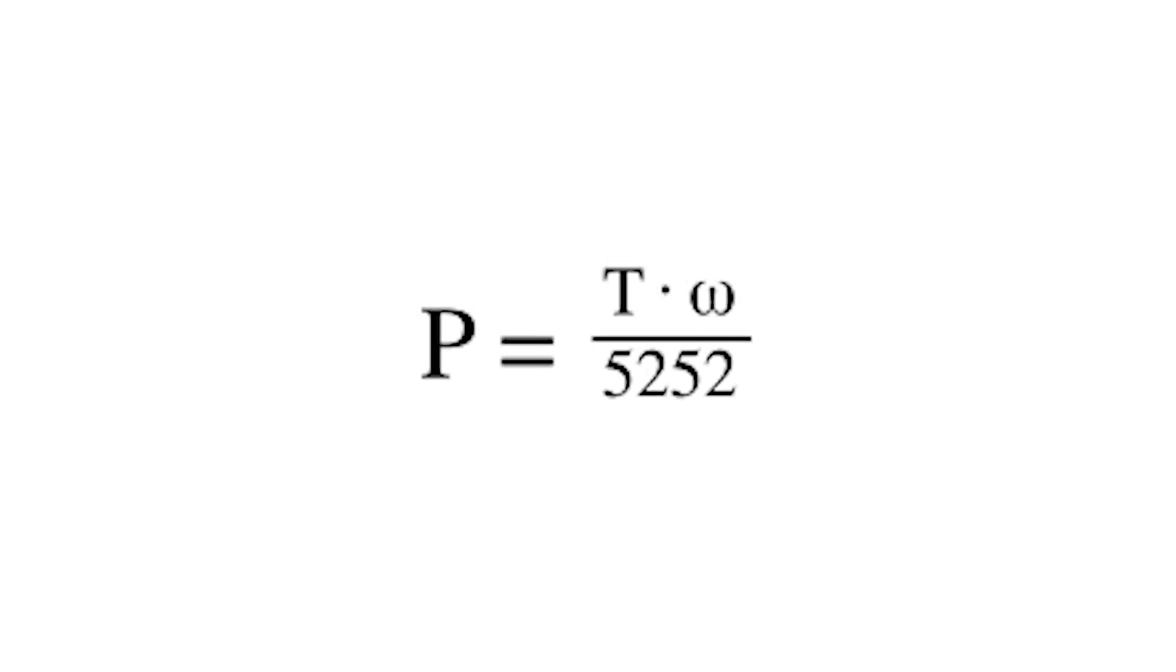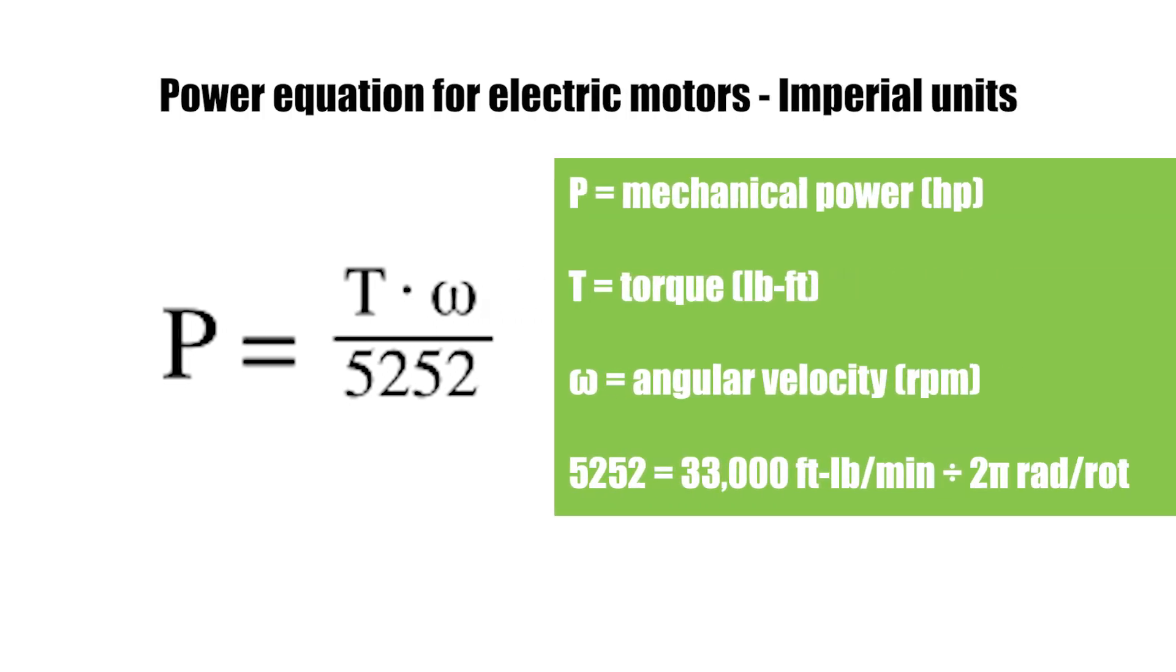In gear motor applications, torque and speed are still often given in imperial units. In these cases, horsepower can be calculated directly with the use of a conversion factor. When torque is given in units of pound-feet and speed in RPM, horsepower equals torque times angular velocity divided by 5,252, which is a conversion factor.